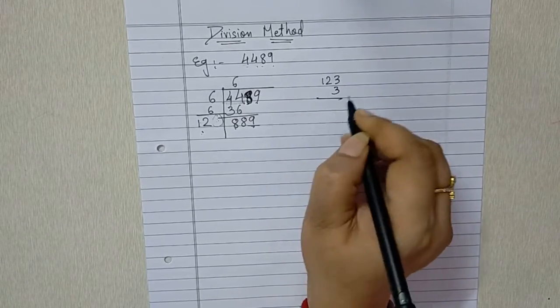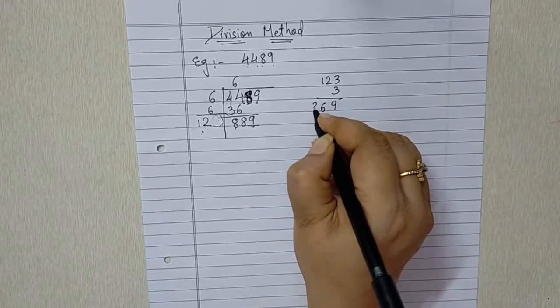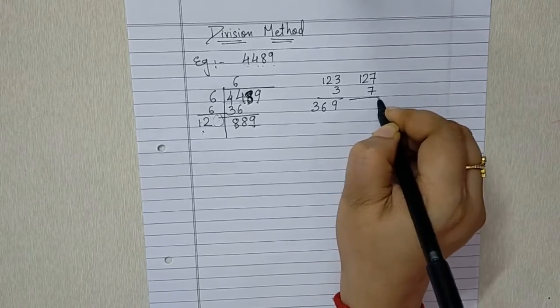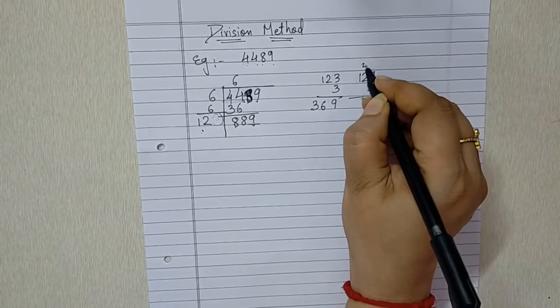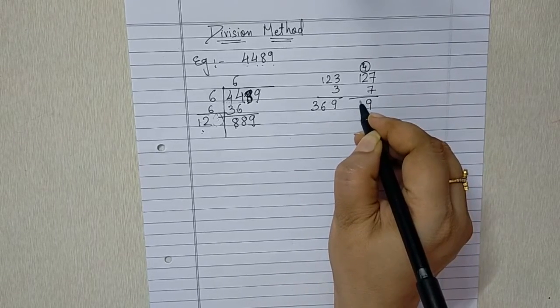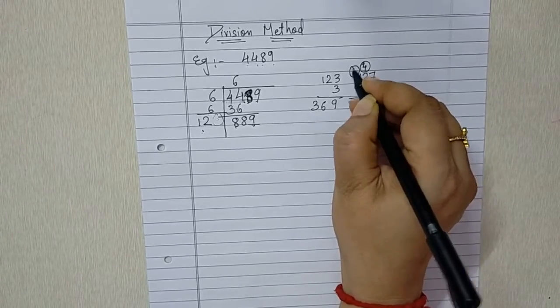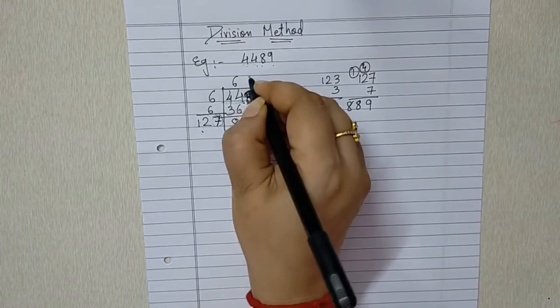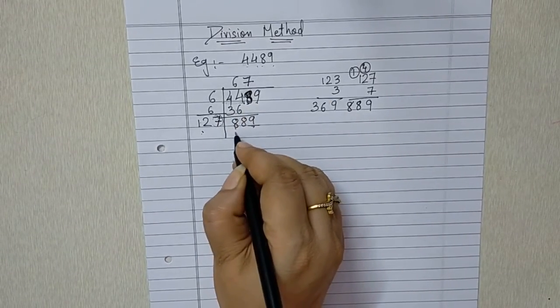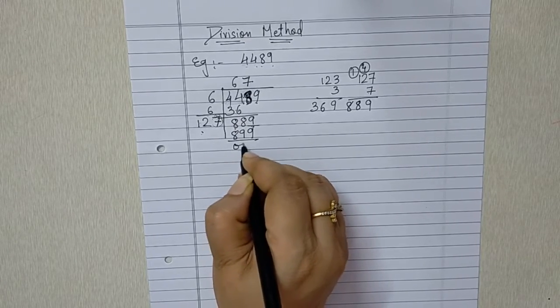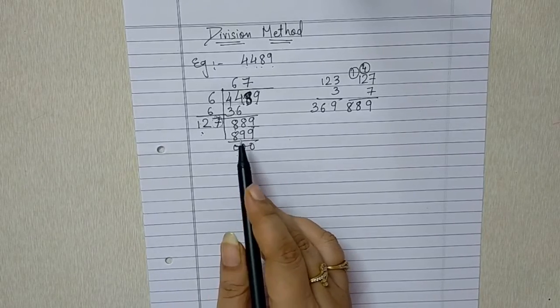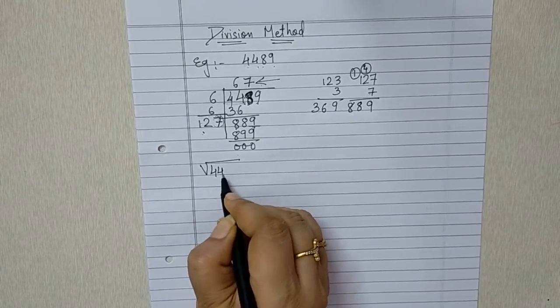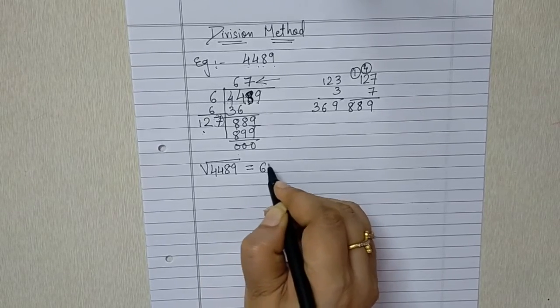That 123×3, do we get 889? No. We get 369. And now what about 127×7? So 127×7, we got 889. So here we have to add 7 and over here also 7. So 127×7, we got 889. And the remainder is also 0. So our quotient is the square root of our question. That is square root of 4,489 is 67.